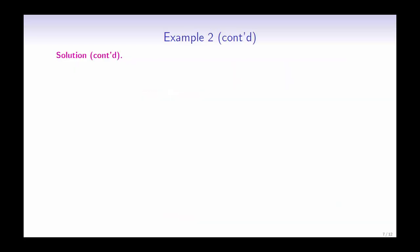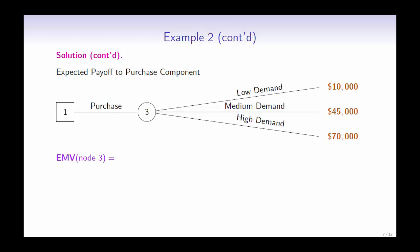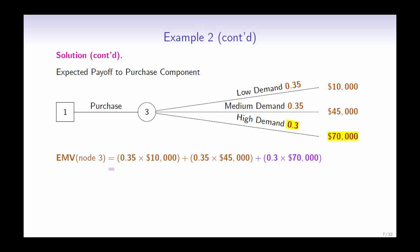Now let's calculate the expected payoff if the company were to purchase the component. The expected payoff is 35% times $100,000 for a low demand, plus 35% times $45,000 for a medium demand, plus 30% times $70,000 for a high demand. This gives us an expected payoff of $40,250.